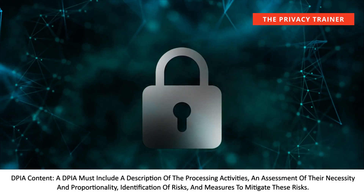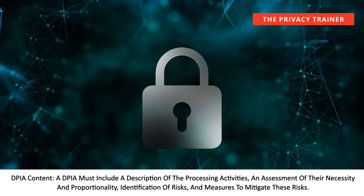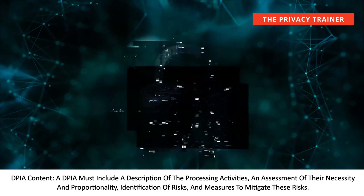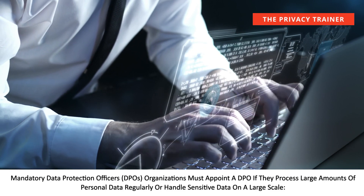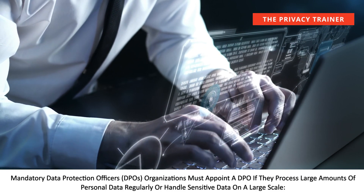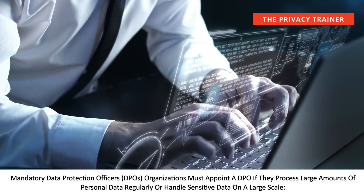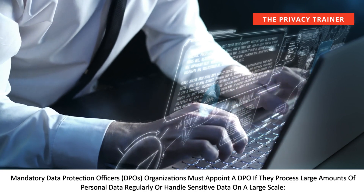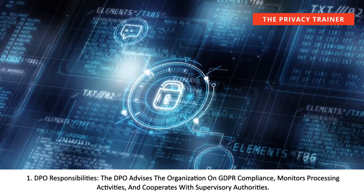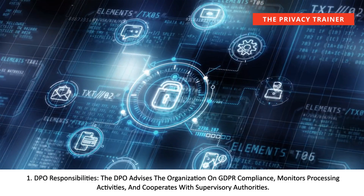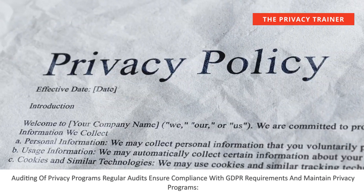A DPIA must include a description of the processing activities, an assessment of their necessity and proportionality, and identification of risks and measures to mitigate those risks. Organizations must appoint a Data Protection Officer (DPO) if they process large amounts of personal data regularly or handle sensitive data on a large scale. The DPO advises the organization on GDPR compliance, monitors processing activities, and cooperates with supervisory authorities.